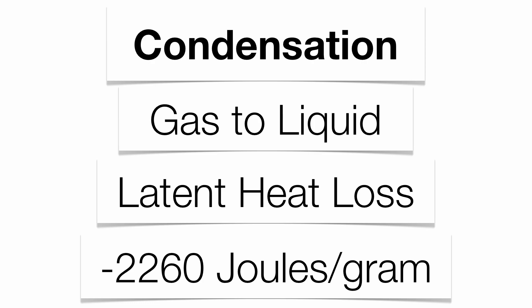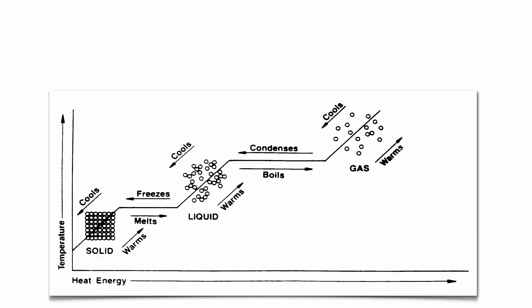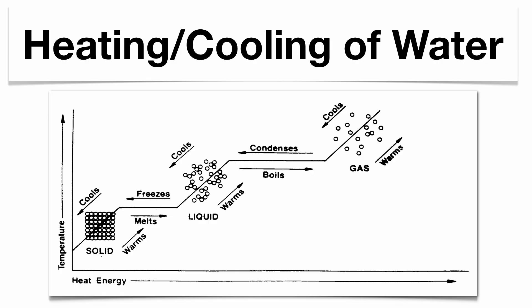Again, a lot of this information is found on page one in your reference table. When you look at the heating and cooling curve of water, you'll notice some sections that are slanted — those represent a temperature change. Water can only do one thing at a time: either change temperature or change its phase. You'll also notice plateaus or horizontal regions — those are your phase changes, whether freezing, melting, condensation, or evaporation.